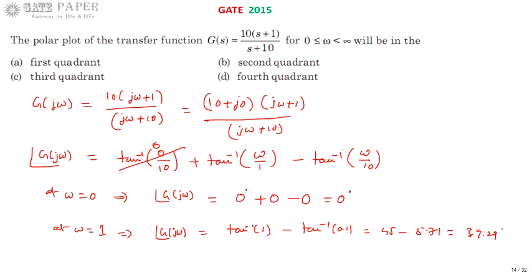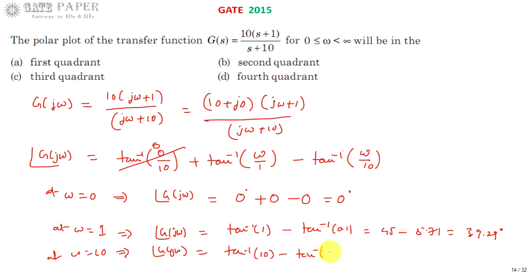At ω = 10: the phase is tan⁻¹(10) − tan⁻¹(1), which is 84.28° − 45°, again approximately 39.29 degrees.